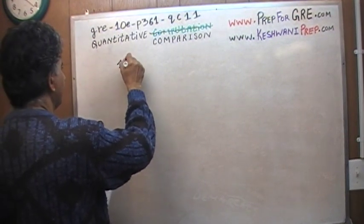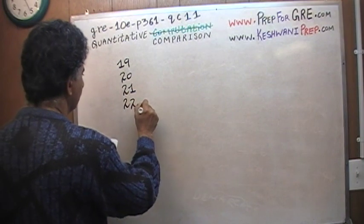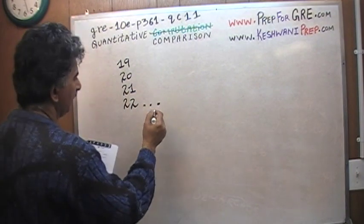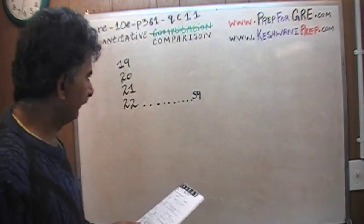19, 20, 21, 22, 23, 24, 25, all the way up to 59. That's our first column.